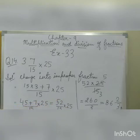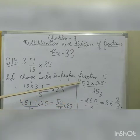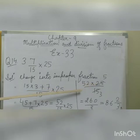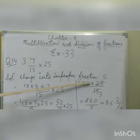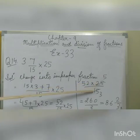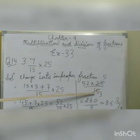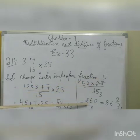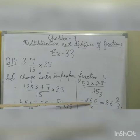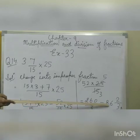Now we have 52/15 as an improper fraction, and we multiply it by the whole number 25. Using the formula, numerator multiplied by whole number upon denominator: 52 multiplied by 25 upon 15. We simplify — 25 and 15 share a factor of 5, giving 5 and 3. Then 52 multiplied by 5 equals 260 upon 3. So the answer is 260 upon 3, or 86 and 2/3.